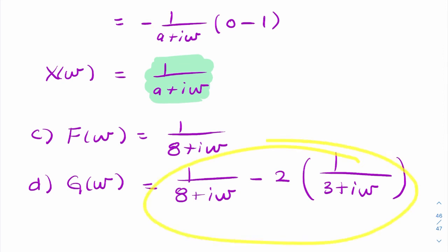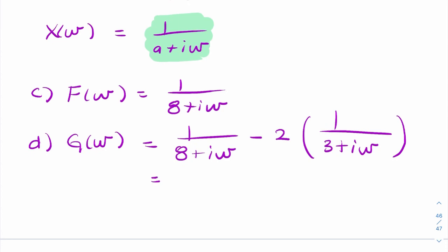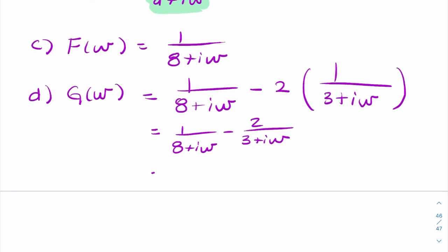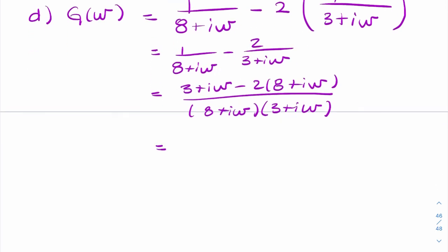So that's your answer, but you wouldn't leave it that way. You would try to simplify it, so this will be one over eight plus i omega minus two over three plus i omega. You would want a common denominator, so it's three plus i omega minus two into eight plus i omega divided by the product.